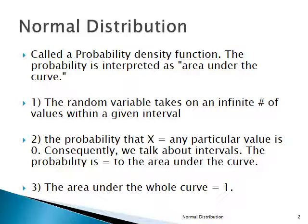The random variable — in this case a normal random variable — since it's a continuous random variable, it can take on an infinite number of values inside a given interval, unlike a discrete probability distribution. Therefore, the probability that the random variable X is exactly equal to any particular value has to be 0. So we can't ask: what's the probability that this normally distributed random variable is exactly equal to 27.42? Because it's continuous with an infinite number of possible values, that probability is going to be 0.